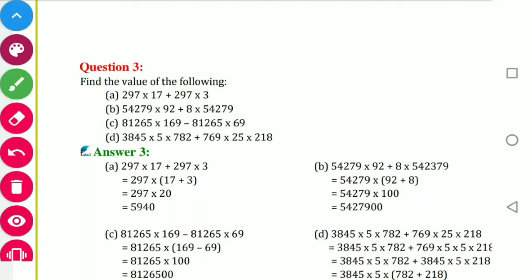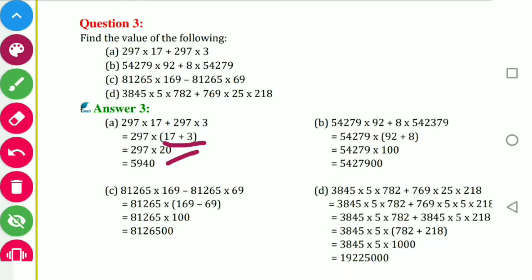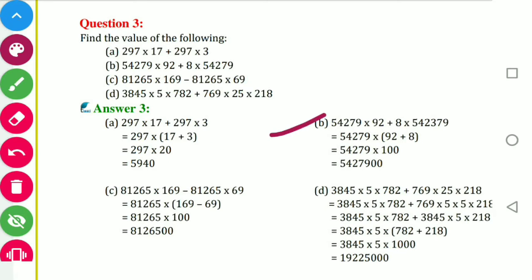Question number 3: find the value using properties. Here we use distributive property. First part: 297 into 17 plus 297 into 3 — 297 is common in both, so we take 297 as common factor and write 297 times (17 plus 3). Then 17 plus 3 becomes 20, and it is easy to multiply 20 with 297.